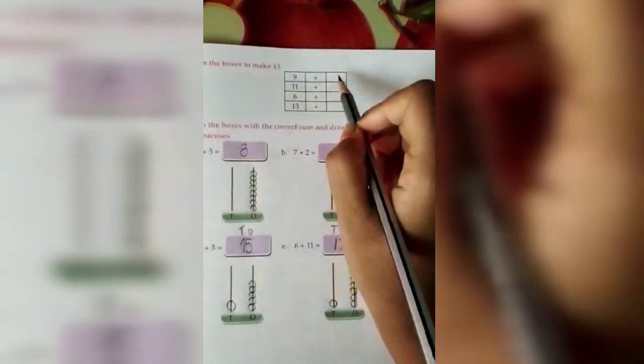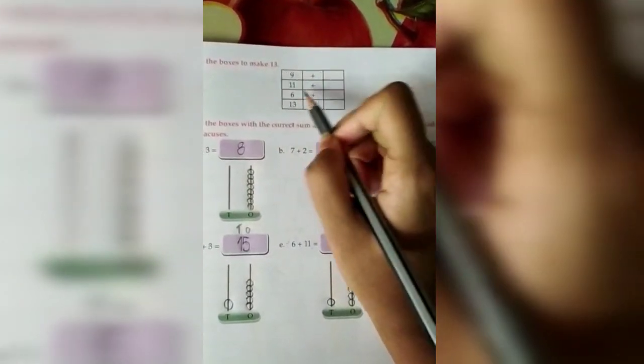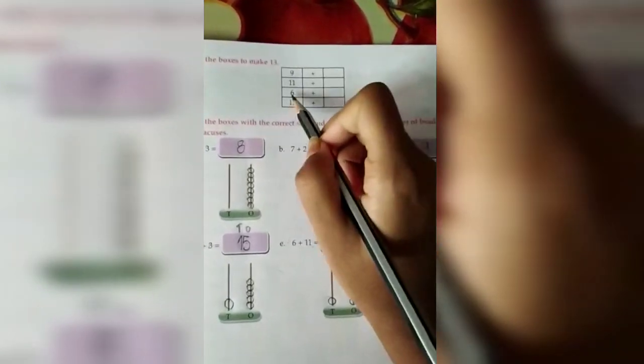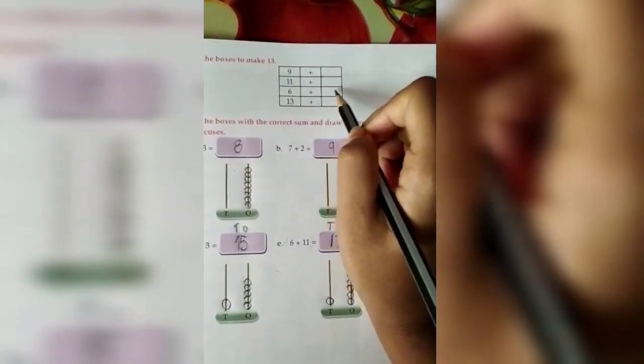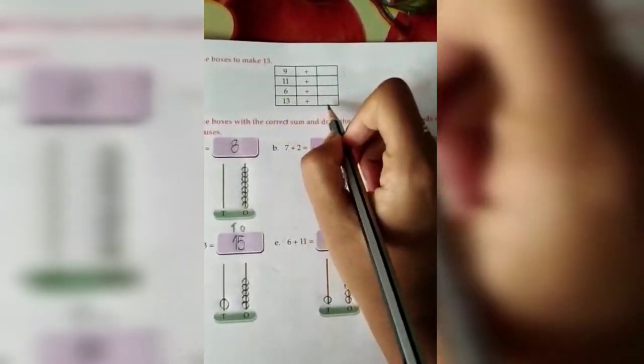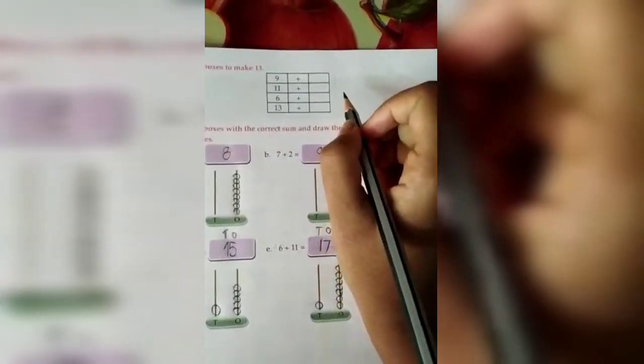Understand? Like with 9 you have to add something which will make a total of 13. With 11 you have to add something which will make a total of 13. With 6 you have to add a number which will make a total of 13. With 13 you have to add a number which will make a total of 13.